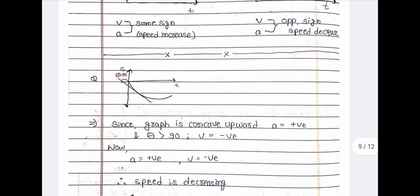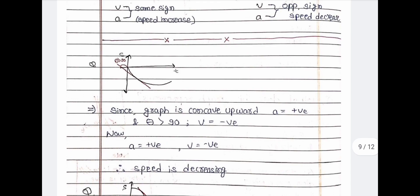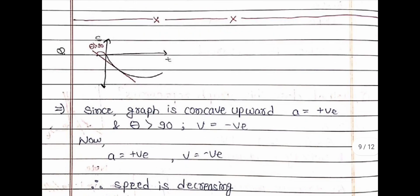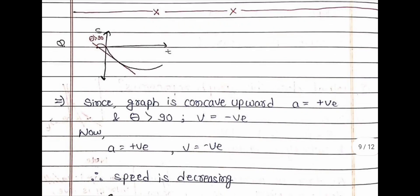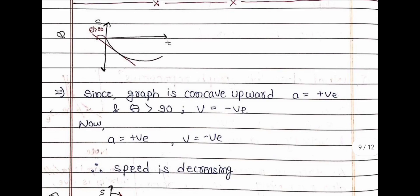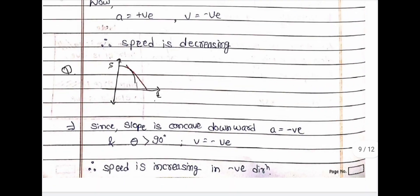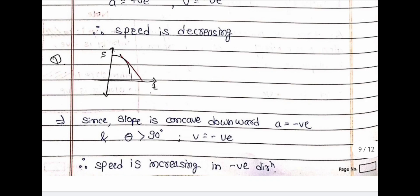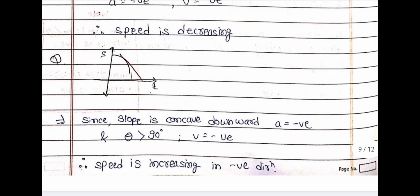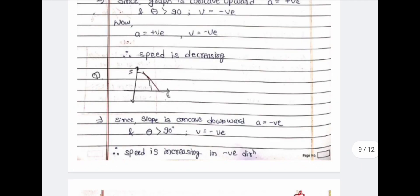In this question, we have to determine from the graph whether speed is increasing or decreasing. The answer is decreasing. In the next question, the answer is that speed is increasing in the negative direction.